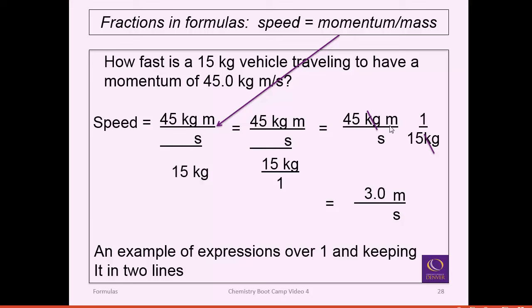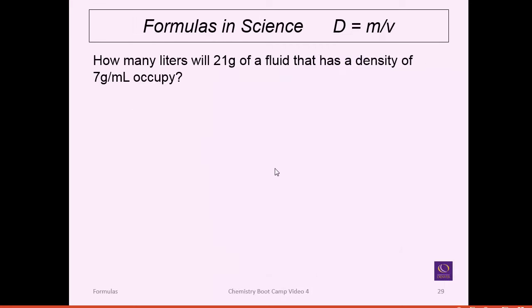Anytime units work correctly, they cancel. If not, convert them first. For example, if one value is in grams and another in kilograms, convert before doing the problem. Now back to density practice: how many liters will 21 grams of a fluid with a density of 7 grams per milliliter occupy? We have mass and density and are looking for volume — three different dimensions, connected by the density formula.